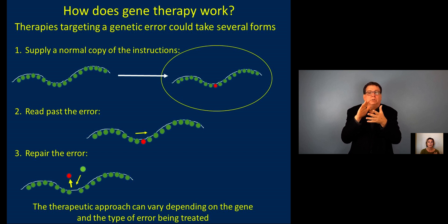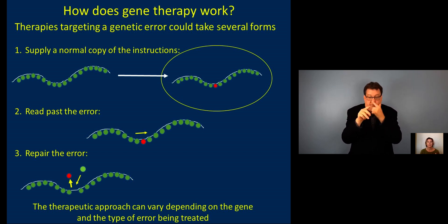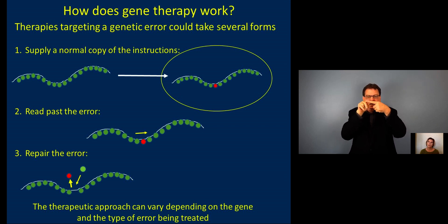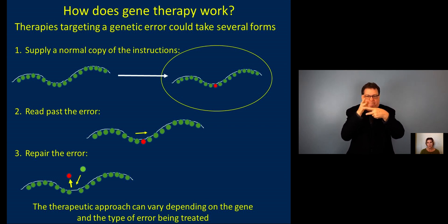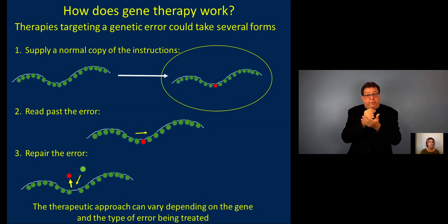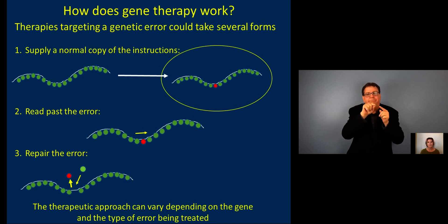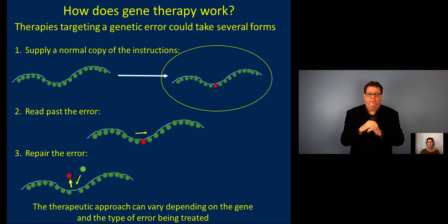The third and newest way is also the most direct way. In this scenario, it's repairing the error at the source — basically swapping out the bad information for the good and restoring the ability of the native gene to code for a normal functional protein. The therapeutic approach chosen for a particular type of disease or gene is going to vary depending on a lot of different details.